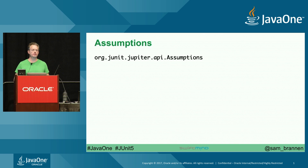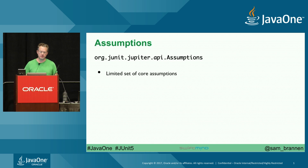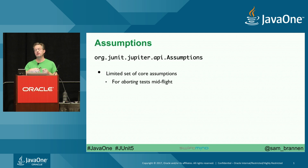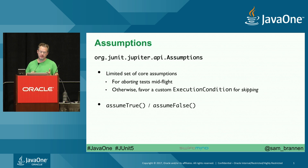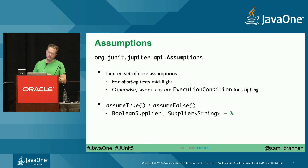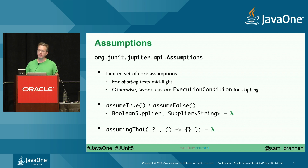Assumptions: you can say 'I assume this to be true, otherwise don't execute the rest of the test.' We have assumeTrue, assumeFalse — taking booleans or boolean suppliers and string suppliers for messages. And assumingThat — a glorified if: if an assumption passes, execute this code; otherwise continue with the test method without marking it as failed. If you want to skip the whole test before it starts, you'd implement your own ExecutionCondition.